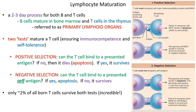Believe it or not, only 2% of all born T cells survive both the positive and negative selection tests. 98% of T cells fail at least one test and die by apoptosis. That's an enormous amount of waste, but it's necessary — the only T cells we can have are ones that can find a foreign invader and attack it, but not mistake our own proteins as self and attack our cells instead.